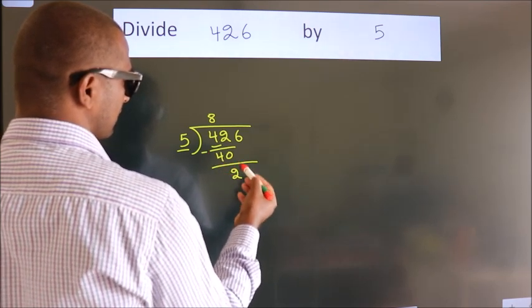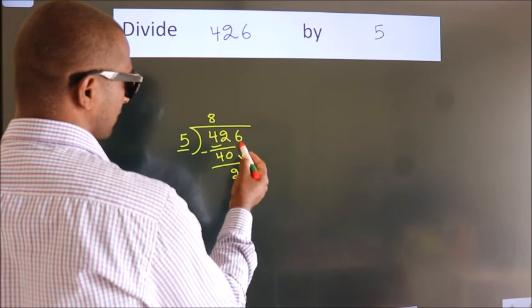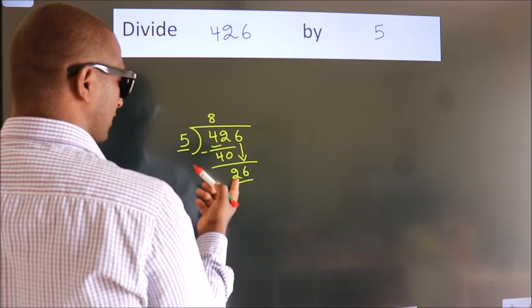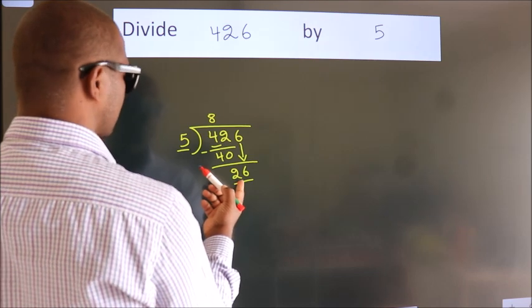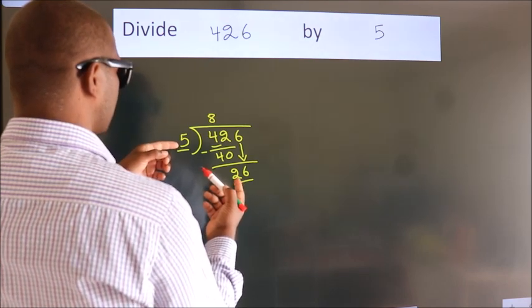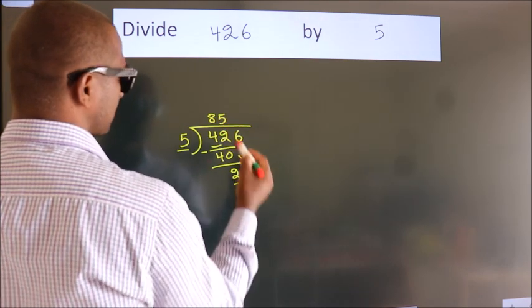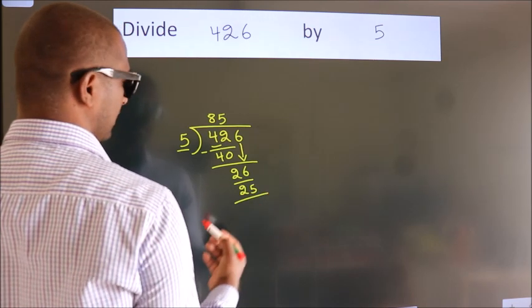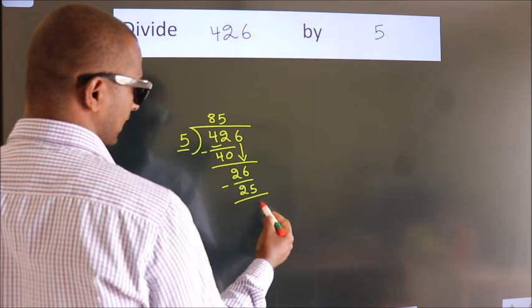After this, bring down the beside number. So, 6 down. So, 26. A number close to 26 in the 5 table is 5×5=25. Now we subtract and get 1.